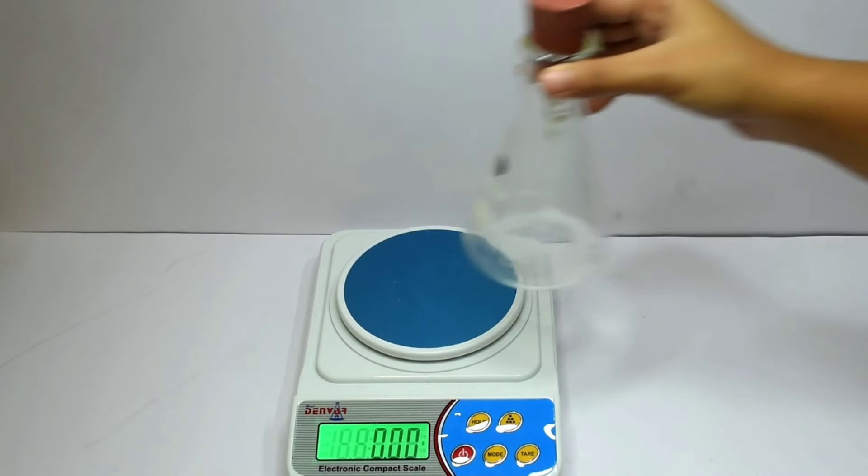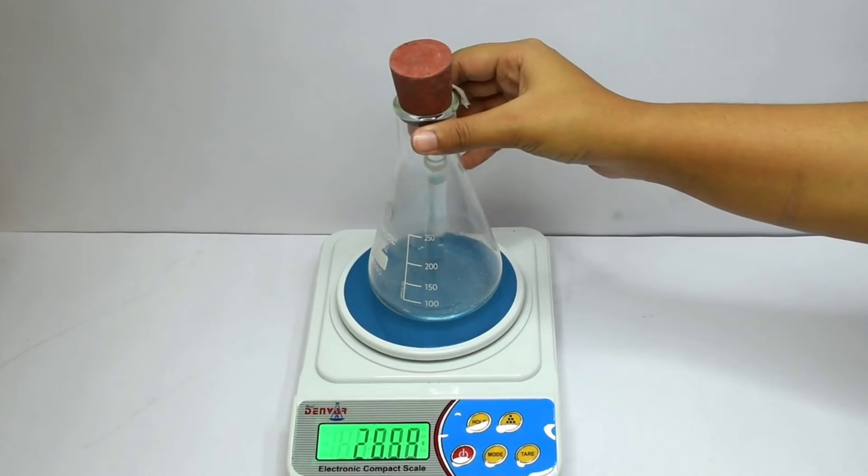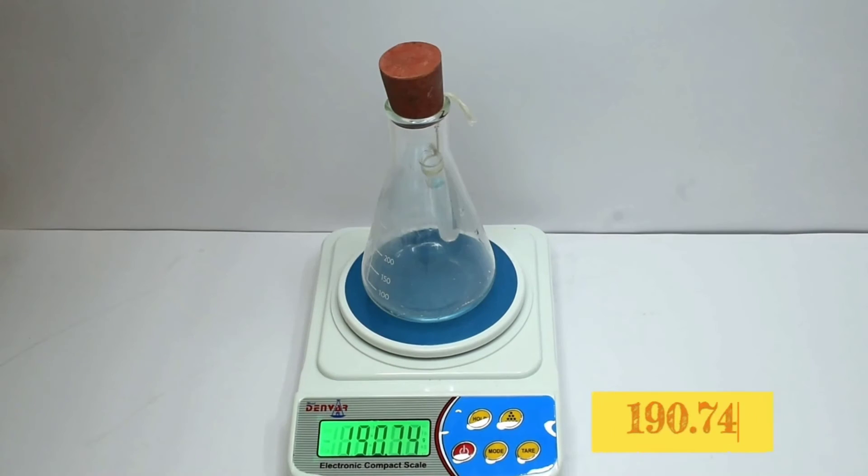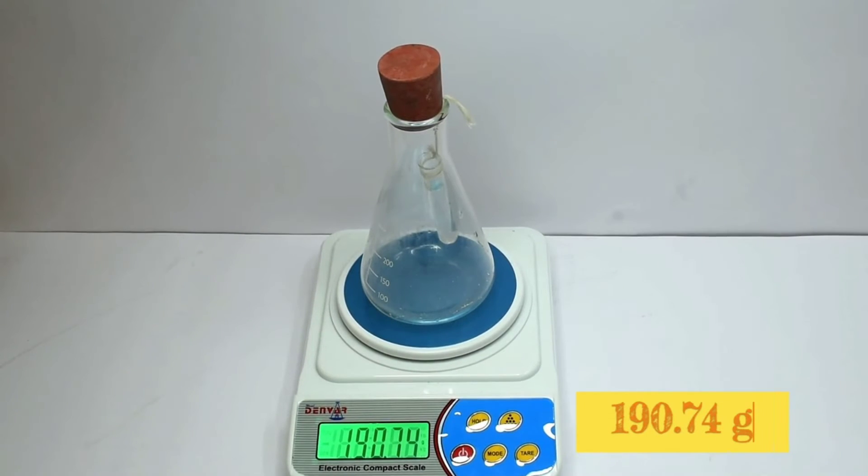Make sure that the solutions do not mix yet and carefully place the conical flask on a digital weight machine. As you can see, the weight of the system before the chemical reaction is 190.74 grams.